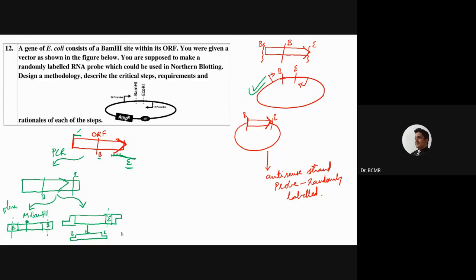This is not a big deal - it's about how flexibly you are thinking and incorporating all the things learned in earlier stages. If you knew those principles, the rest is easy. Now your next job would be to generate the probe that is randomly labeled - I think we discussed this in one of the earlier classes.